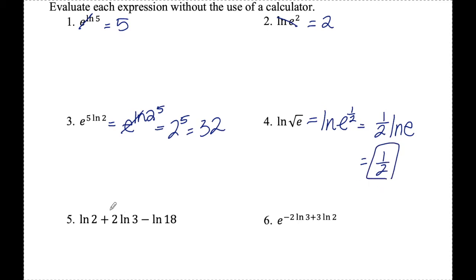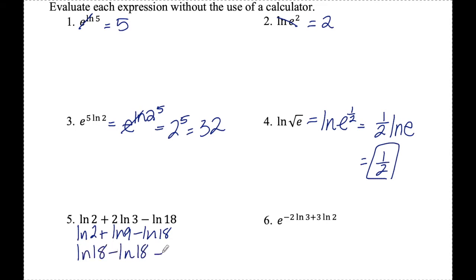Number five: I'm going to first rewrite this multiplication in front as an exponent, so that would be ln of three squared, which is the same thing as ln of nine. Now working left to right, this addition becomes multiplication, so that would be ln of two times nine, which is ln of 18. And then ln of 18 minus ln of 18 is just zero.